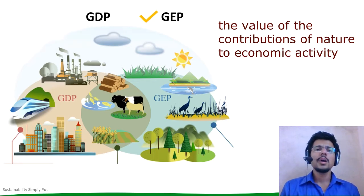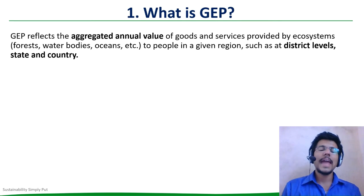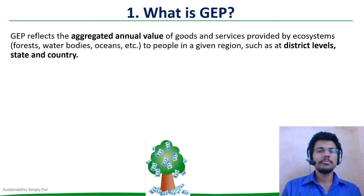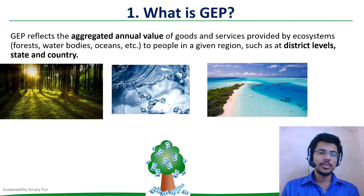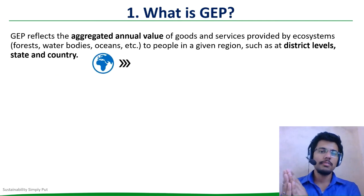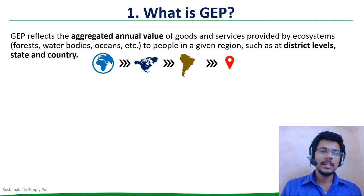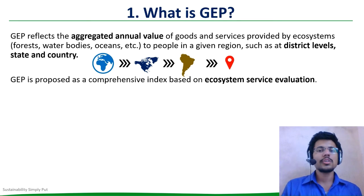First, what is GEP? GEP reflects the aggregated annual value of goods and services provided by ecosystems — such as forests, water bodies, oceans, etc. — to people in a given region, such as at district, state, or country levels. It is proposed as a comprehensive index based on ecosystem service evaluation.